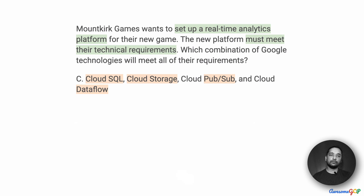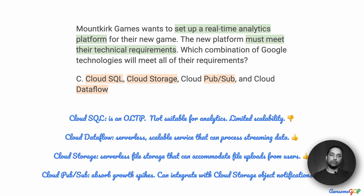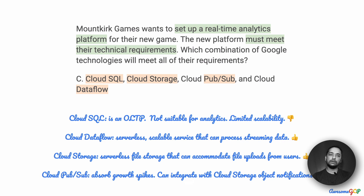Option C suggests using a combination of Cloud SQL, Cloud Storage, Cloud Pub/Sub, and Cloud Dataflow. This is very similar to option B, except that instead of BigQuery it uses Cloud SQL. Cloud SQL is a transaction processing engine, not suitable for analytics, and has limited scalability. We also know that for Mountkirk Games the existing MySQL setup has not scaled well. Cloud SQL could use MySQL, Postgres, or other newer databases included in Cloud SQL, but it still will not scale to the kind of analytics that BigQuery would handle better.